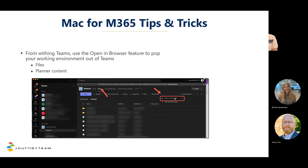When working with Teams on a Mac, there's a Files tab in channels by default. I personally prefer to use the 'Open in SharePoint' button from within Teams to pop over to the browser, where I have a bigger landscape to interact with content, document libraries, and tools like Planner. I love the Teams client for collaboration and chatting, but for editing content or working in Planner I always pop that over to the browser.